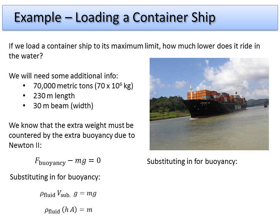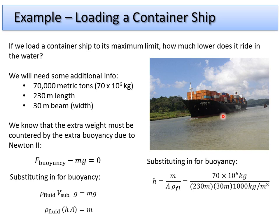We substitute in the numbers into the buoyancy equation. We make one approximation: we assume the ship is rectangular, with 30 meters width at every point. That's actually its maximum beam, but for a rough estimate we'll use 30 meters as the width and 230 meters as the length throughout — treating it as a rectangle just makes the math a little easier.